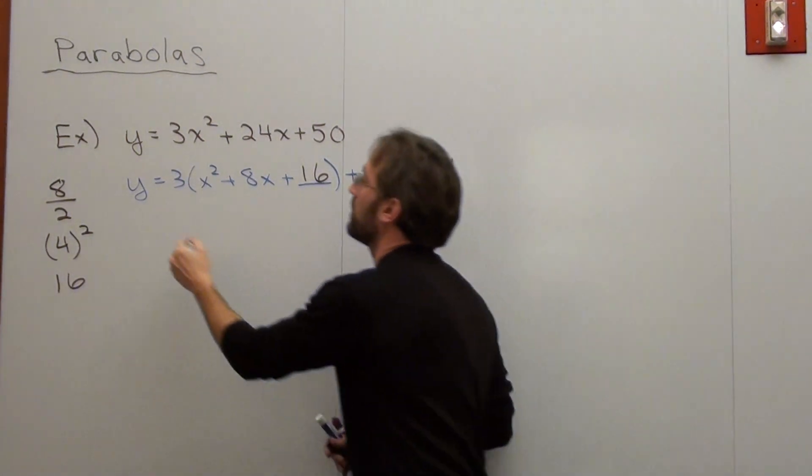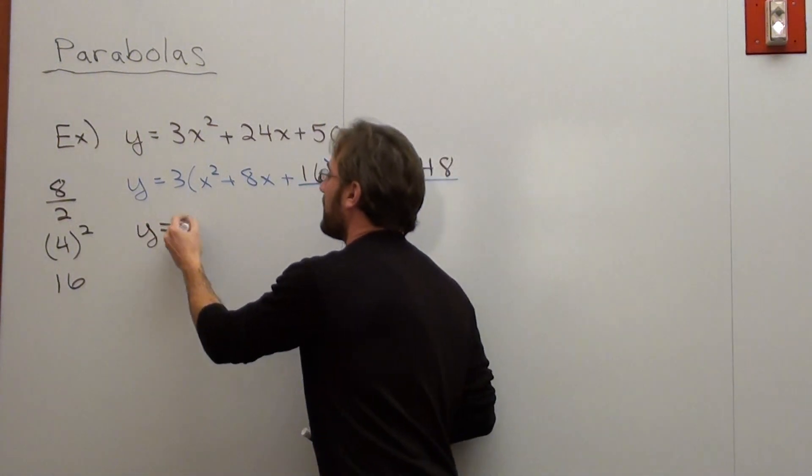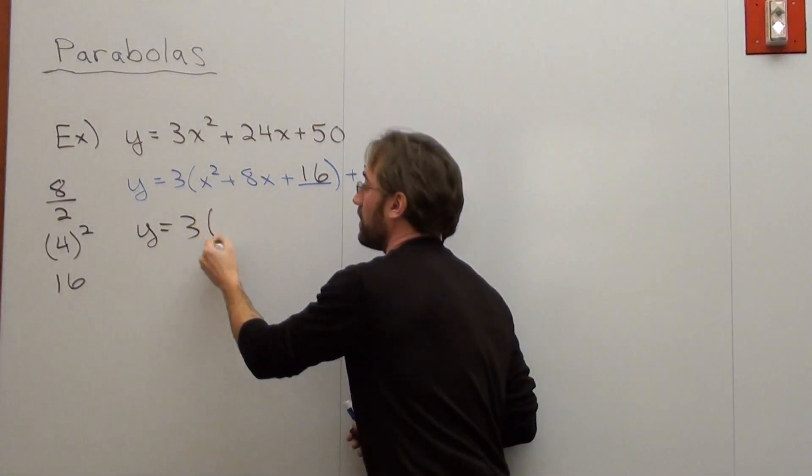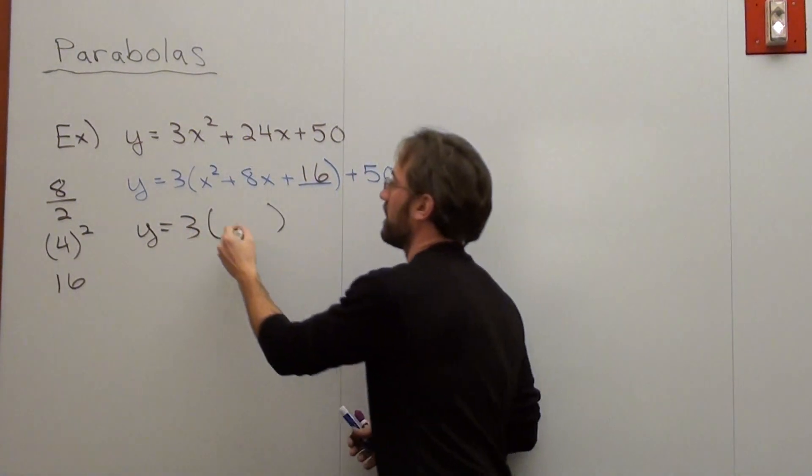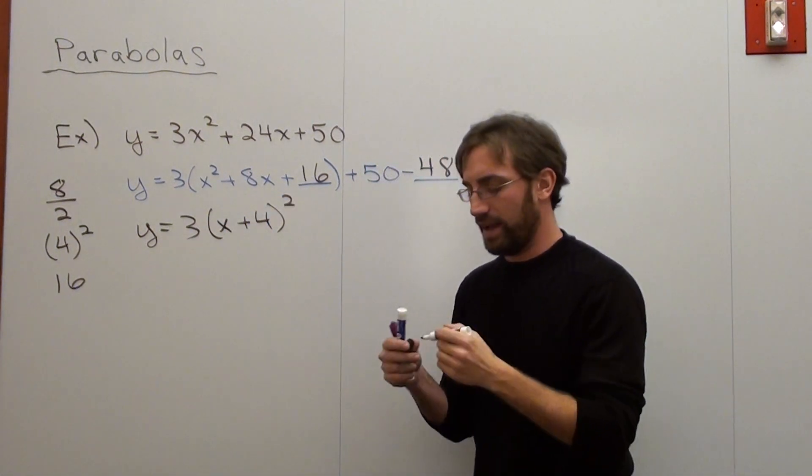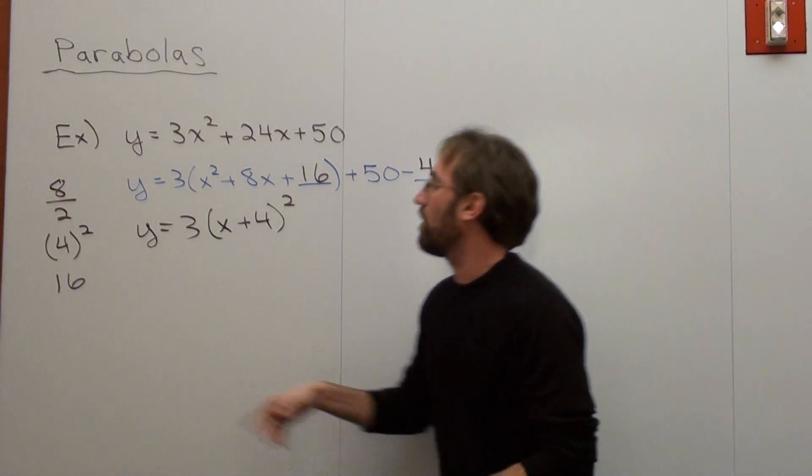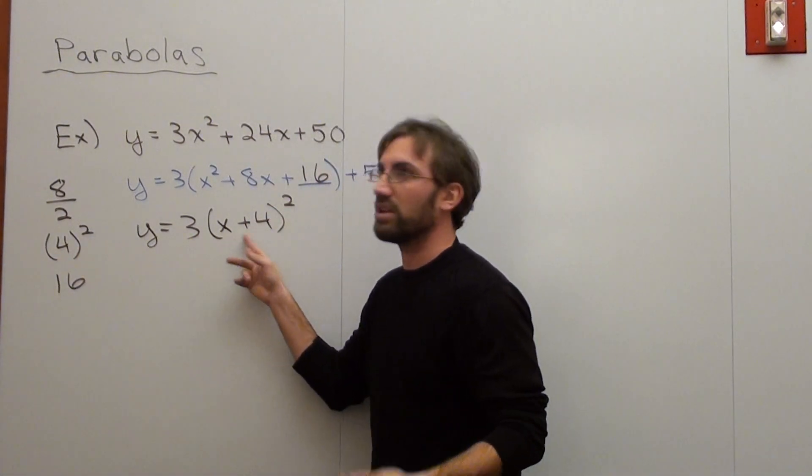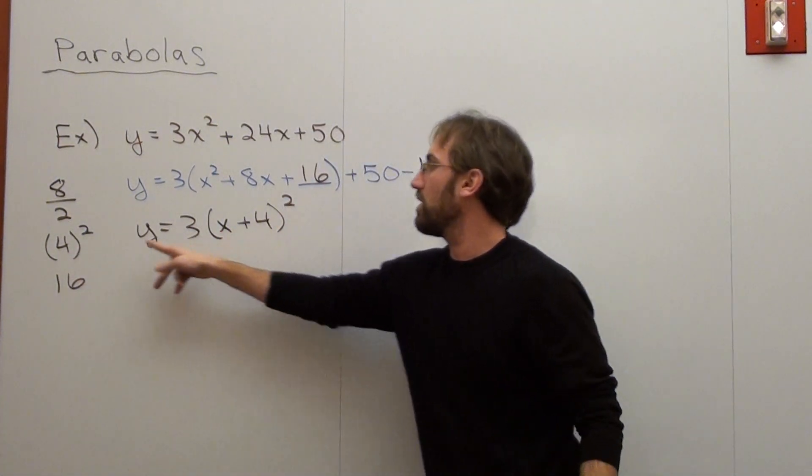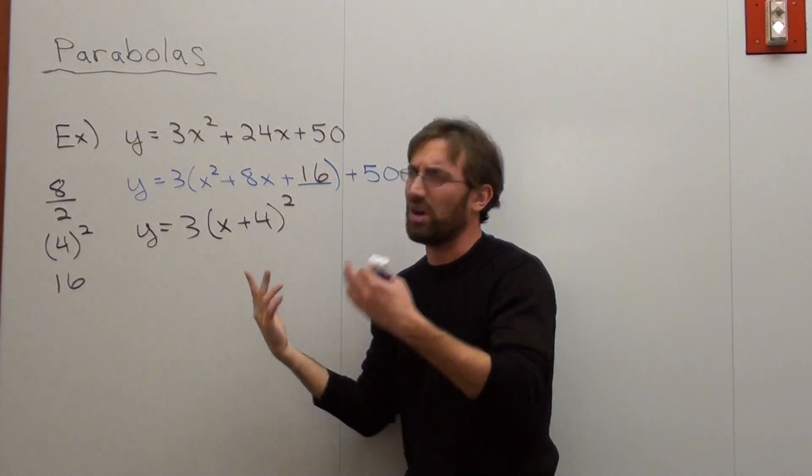Yes. Y equals 3. Now this factors into two binomials. And that binomial is the same binomial over and over again. And what it turns out to be is x plus 4 squared. Whatever the number is in parentheses is going to be the number that's accompanied with the x. So if this were a negative 3, it would be x minus 3 squared. If it were a 5, it would be x plus 5 squared.